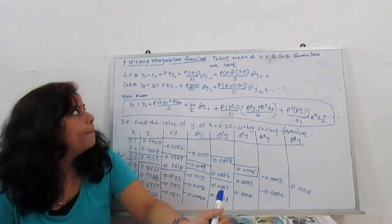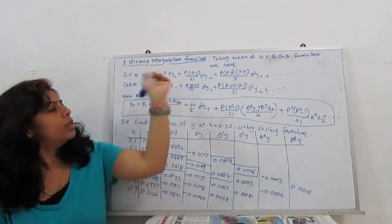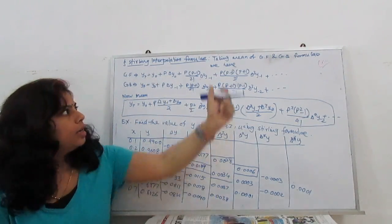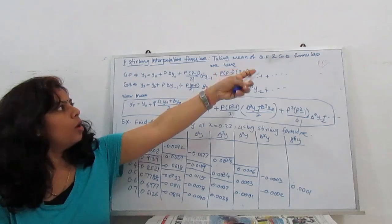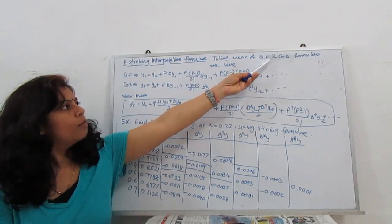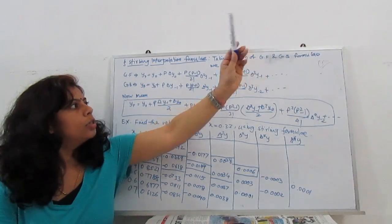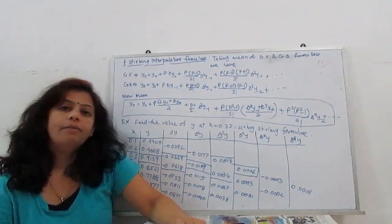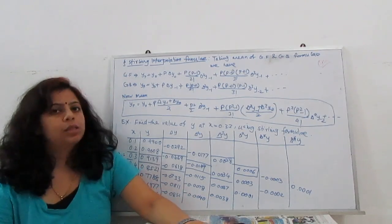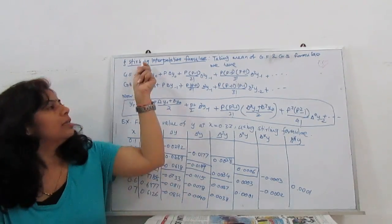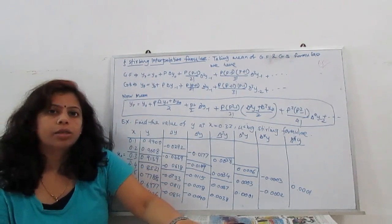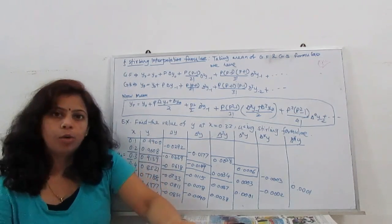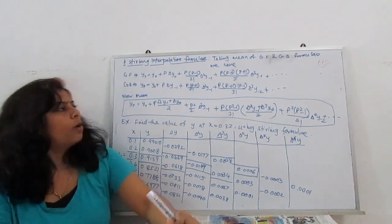The Stirling formula is obtained by taking the mean of the Gauss forward and Gauss backward formulas. When we average these two formulas, we get a new formula called the Stirling interpolation formula. Let's have a look at what the Gauss forward formula is.